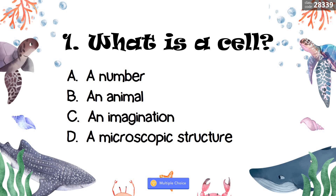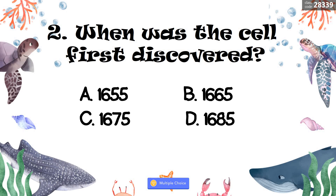Number two: When was the cell first discovered? A. 1655. B. 1665. C. 1675. D. 1685. That's correct — it's letter B, 1665.